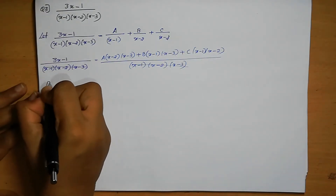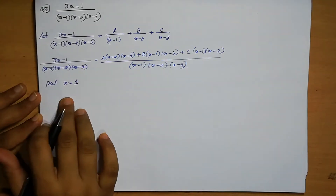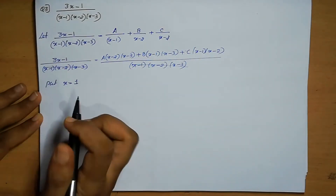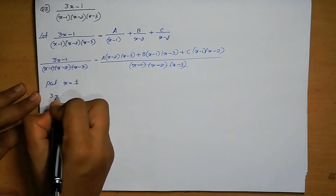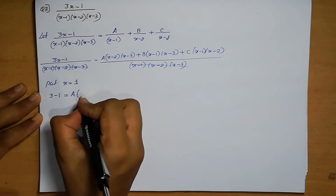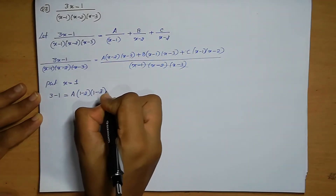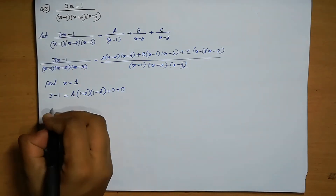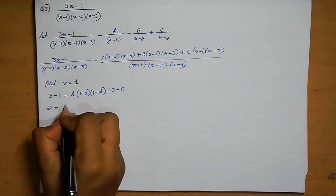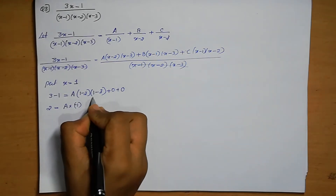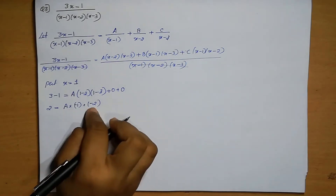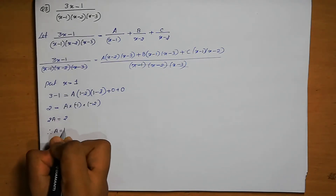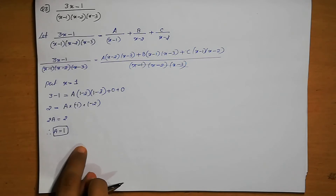Put x equals 1: 3(1) minus 1 equals A(1 minus 2)(1 minus 3) plus 0 plus 0. So, 2 equals A(minus 1)(minus 2) equals 2A. Therefore, A equals 1.